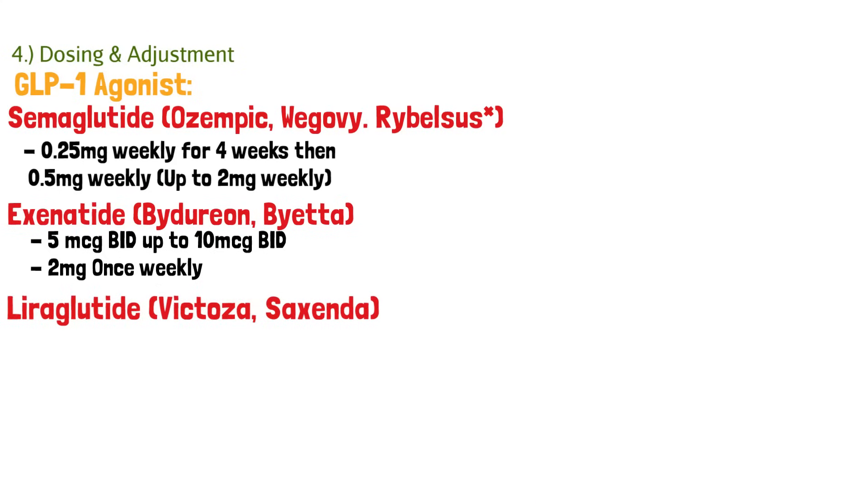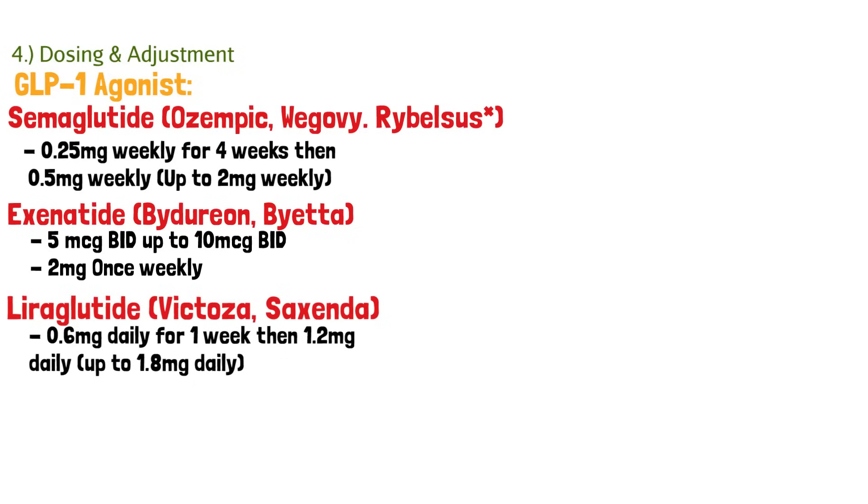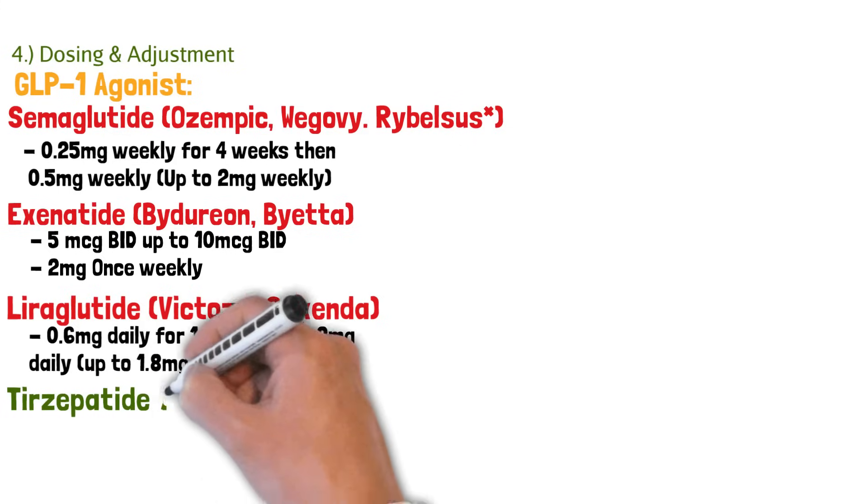And then we have liraglutide, which is Victoza or Saxenda. This is a daily injection, 0.6 milligrams for one week, and then we can double it to 1.2 daily, and then up to 1.8 daily.